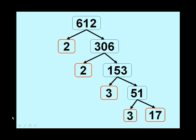So the numbers in red, 2, 2, 3, 3, and 17, are the prime factors of 612. Now, these will come back on a later slide, but just keep those in your mind for now.